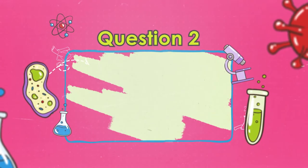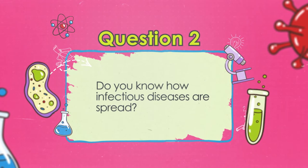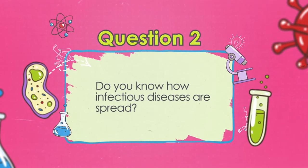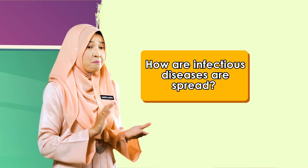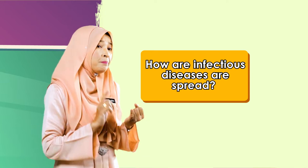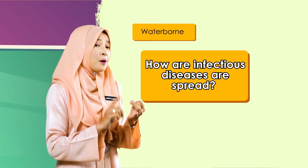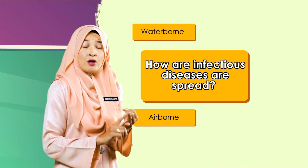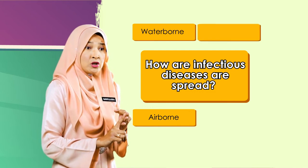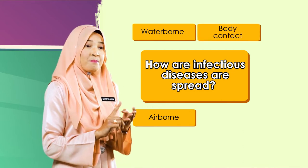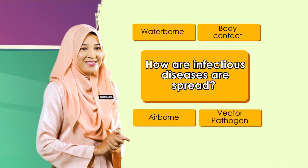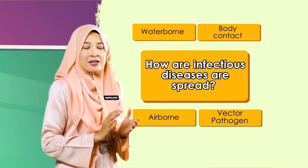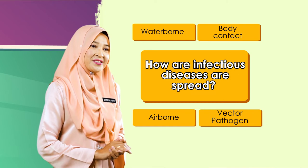Do you know how infectious diseases are spread? Infectious diseases can spread by being water-borne, by being airborne, through body contact, and by vector-carrying pathogens. Let us discuss each of these methods.